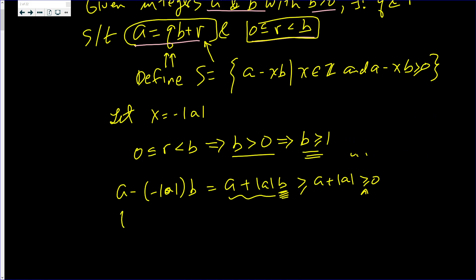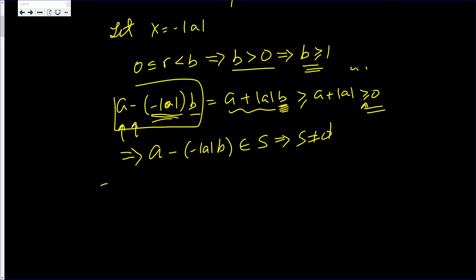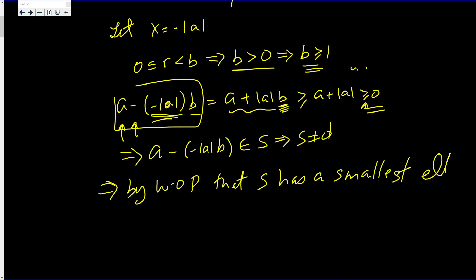Since A minus (−|A|)·B is greater than or equal to 0, this quantity is in S, which implies S is not the empty set. But this implies, by the well-ordering principle, that S has a smallest element. We'll call this smallest element R.